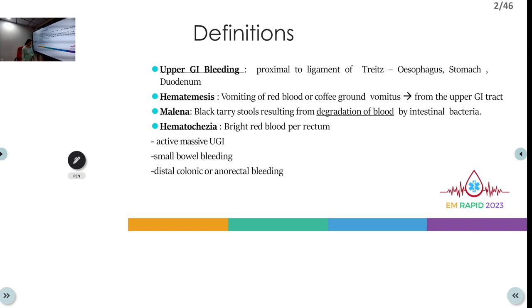First we will talk about the common terminologies in GI bleeding. Upper GI bleed is any bleed that is proximal to the ligament of Treitz, which corresponds to the second part of the duodenum. So anything proximal to that is upper GI, including the esophagus, stomach, and the duodenum just proximal to the ligament of Treitz.